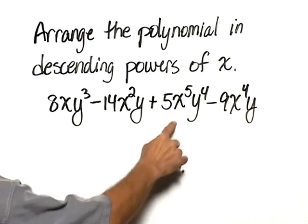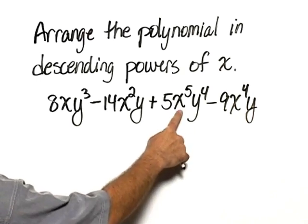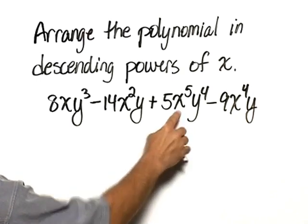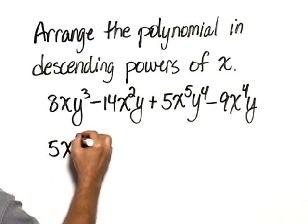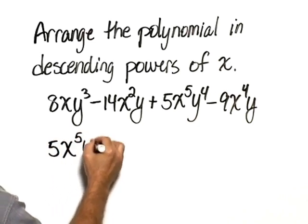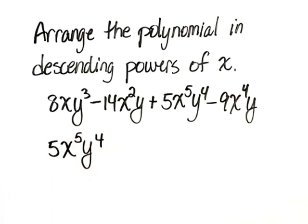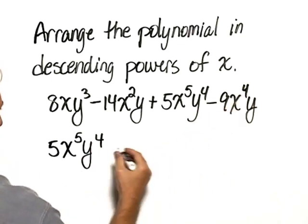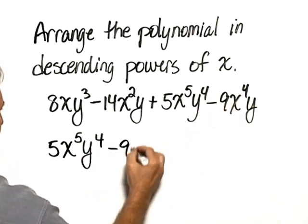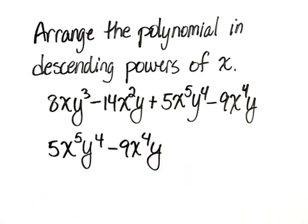The largest power of x that we have is x to the fifth, so we start by writing 5x to the fifth y to the fourth. The next largest power we have is x to the fourth, so minus 9x to the fourth y.